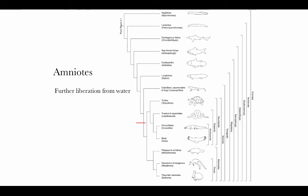When we come to amniotes, the big story is the further liberation from water. Amniotes have the innovation of containing their embryos within a shelled egg, so they don't have to lay their eggs in water. Their skin also shows signs of that further liberation from water — we see an increased thickening of the stratum corneum, giving a much thicker, hardened, waterproof layer on the outside of their skin compared to amphibians, who needed to keep it thin for respiratory exchange. We also see in amniotes a lot of keratinized scales or plates, hardened by keratin rather than bone.